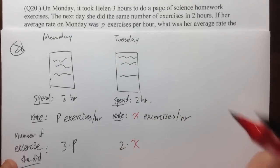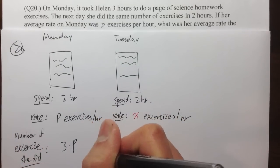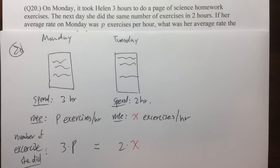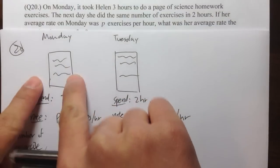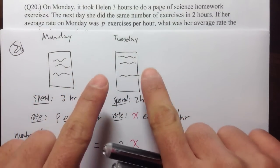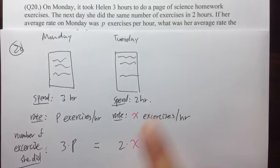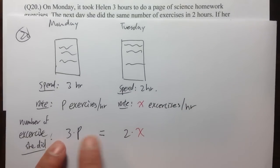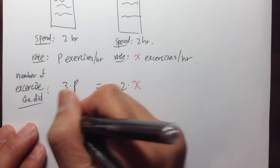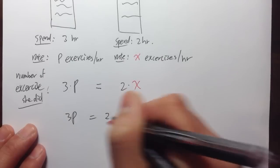And the situation is, they are the same. So they have to be equal. If she did 120 questions on Monday, she must also did 120 questions on Tuesday. In another word, 3P must equal to 2 times X. So here we have 3P equals to 2X.